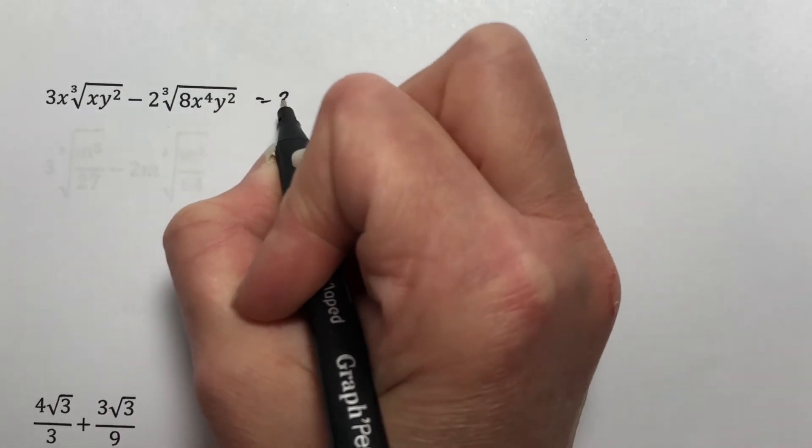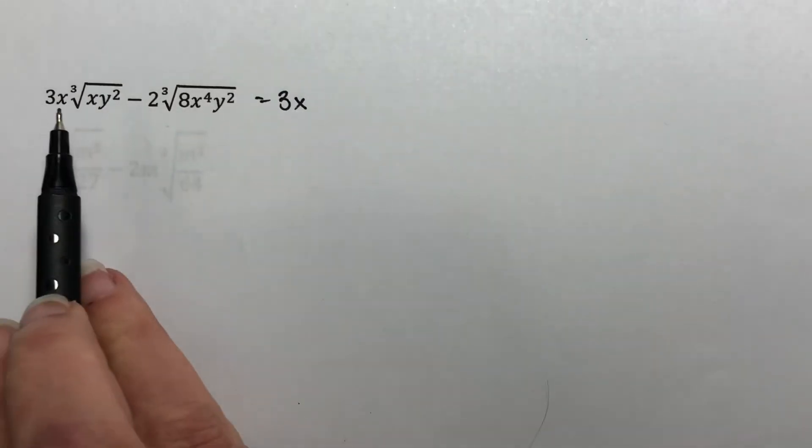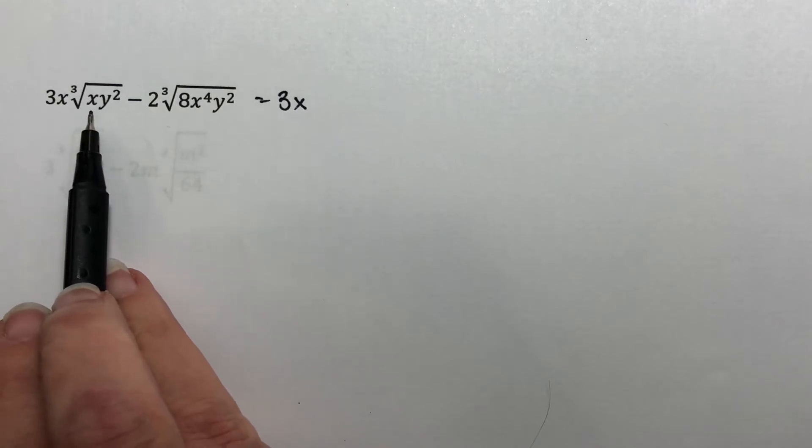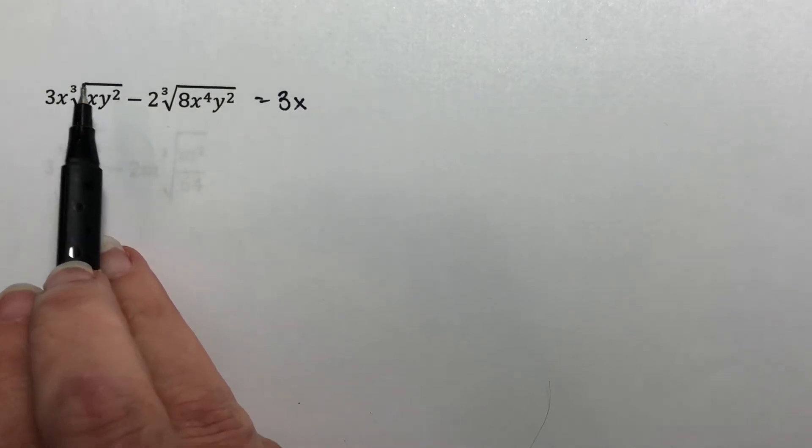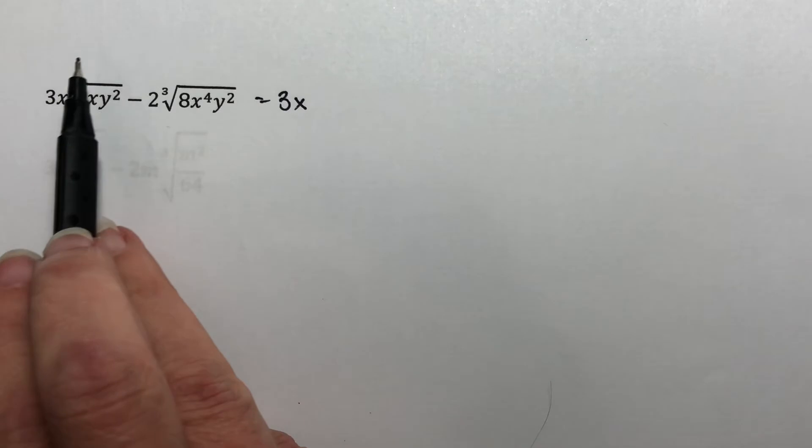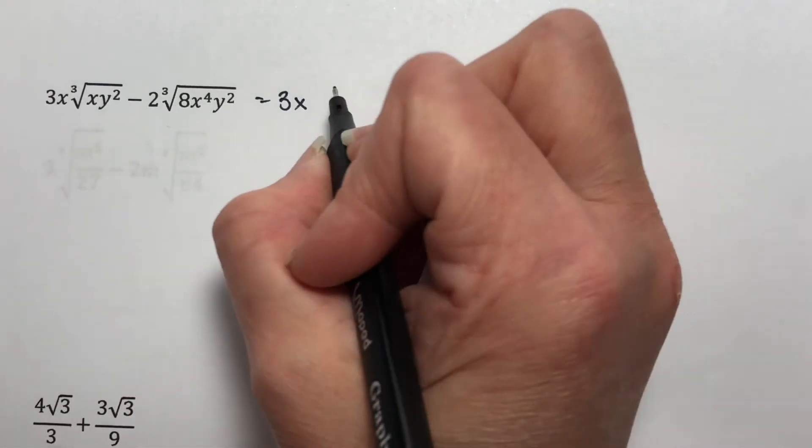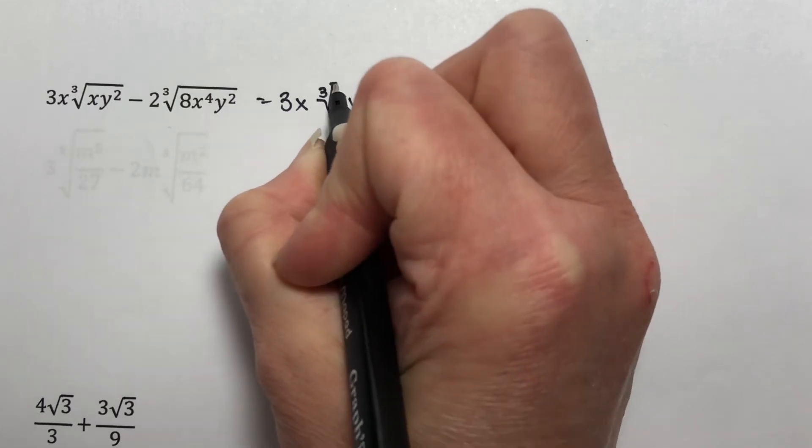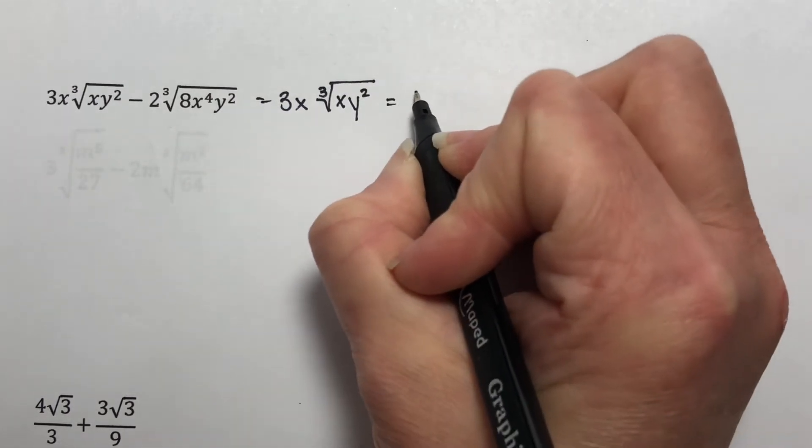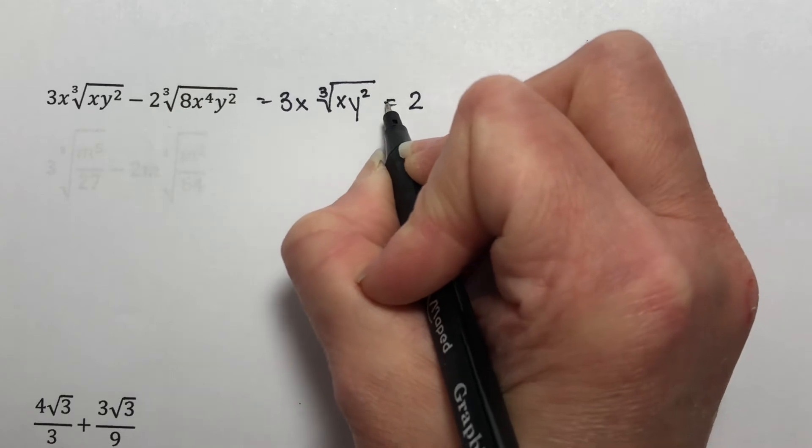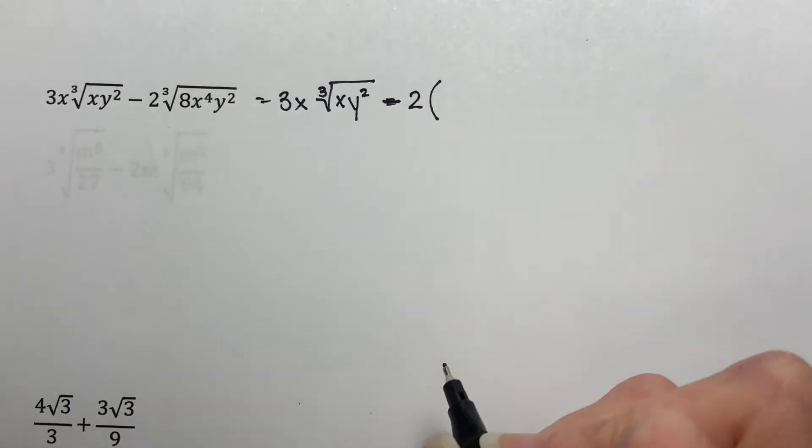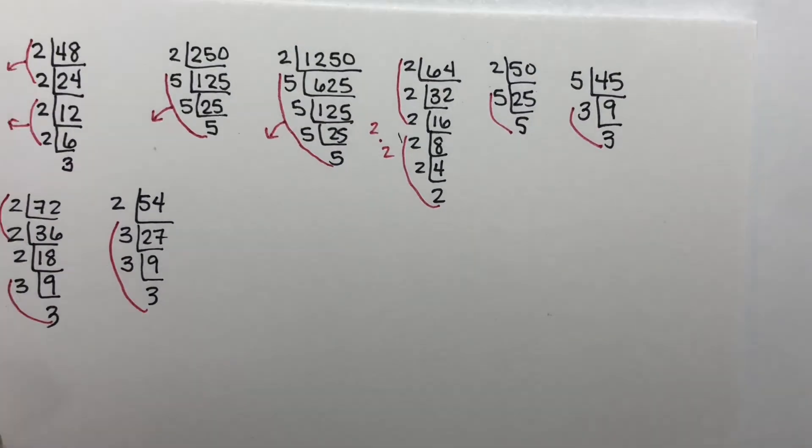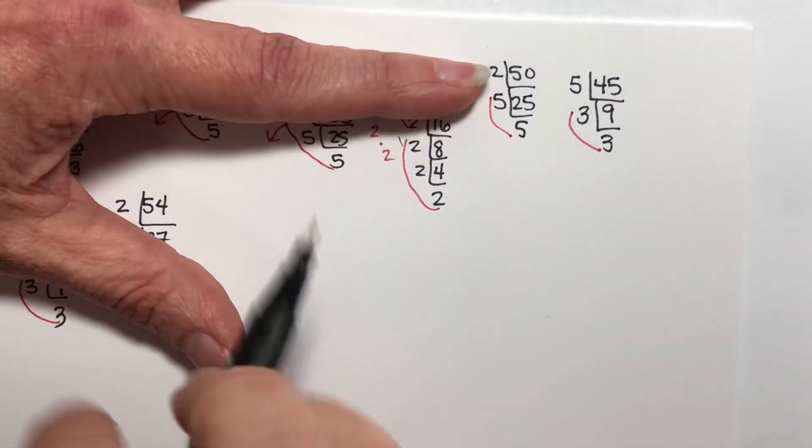So for the first one, I have 3x times. The exponent here is a one and one is smaller than three. So that doesn't simplify. The exponent here is a two, which is smaller than three. So this whole radical does not simplify. The cube root of x, y squared, minus two times. The cube root of eight. Well, the cube root of eight is two.